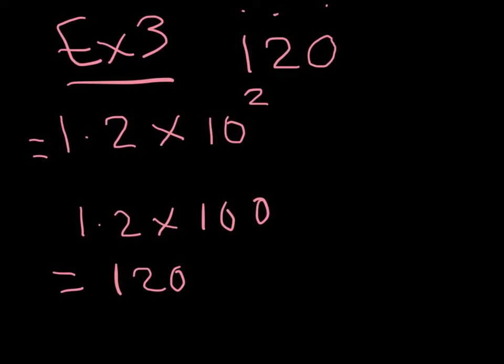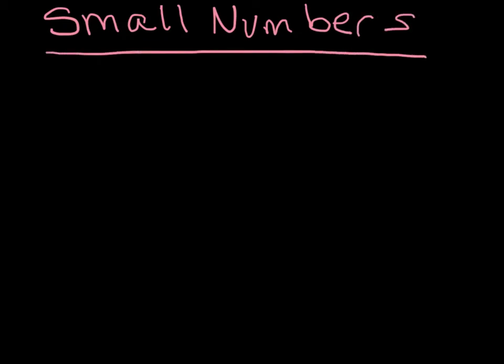So next we're going to do small numbers and they're a slightly different rule. Small numbers, I showed you already with the mass of an electron, have one difference right off the top and that difference is that you have a negative exponent and that is because something you learn later on in math class is that a negative exponent is kind of like dividing. So you're making it smaller by dividing.